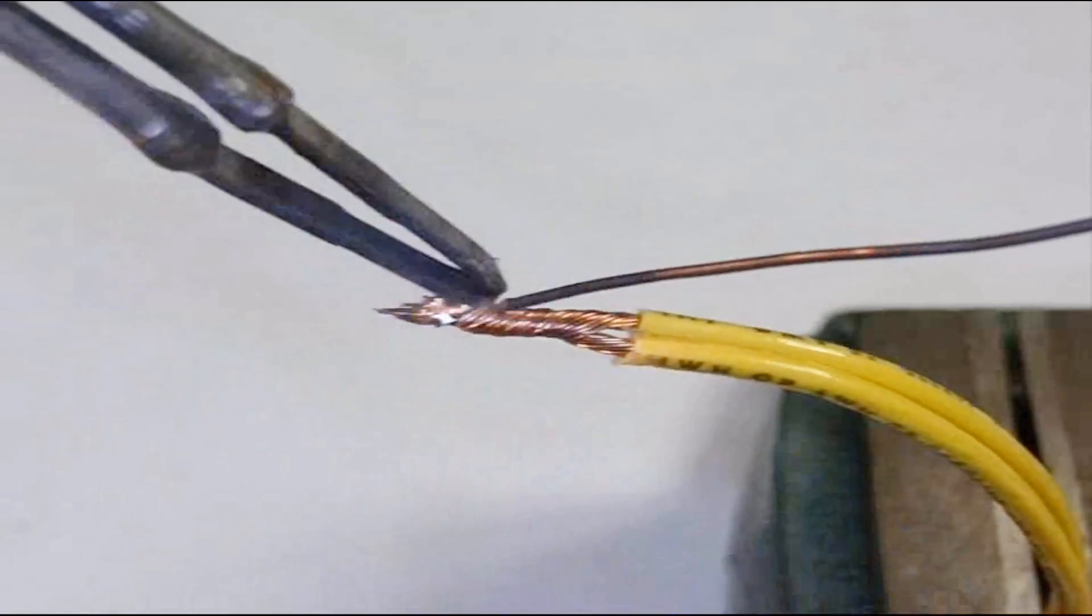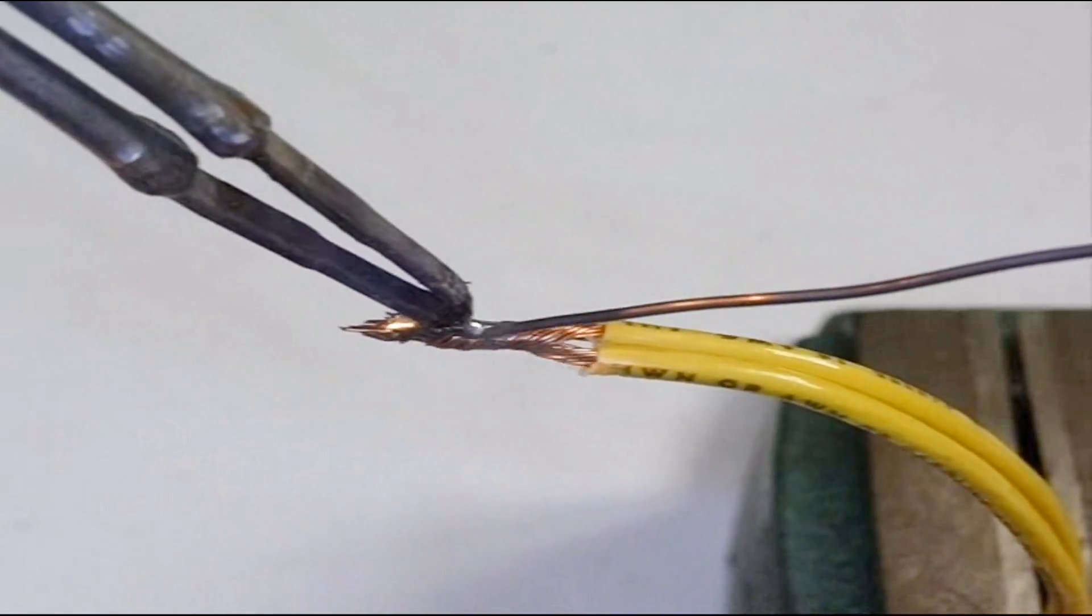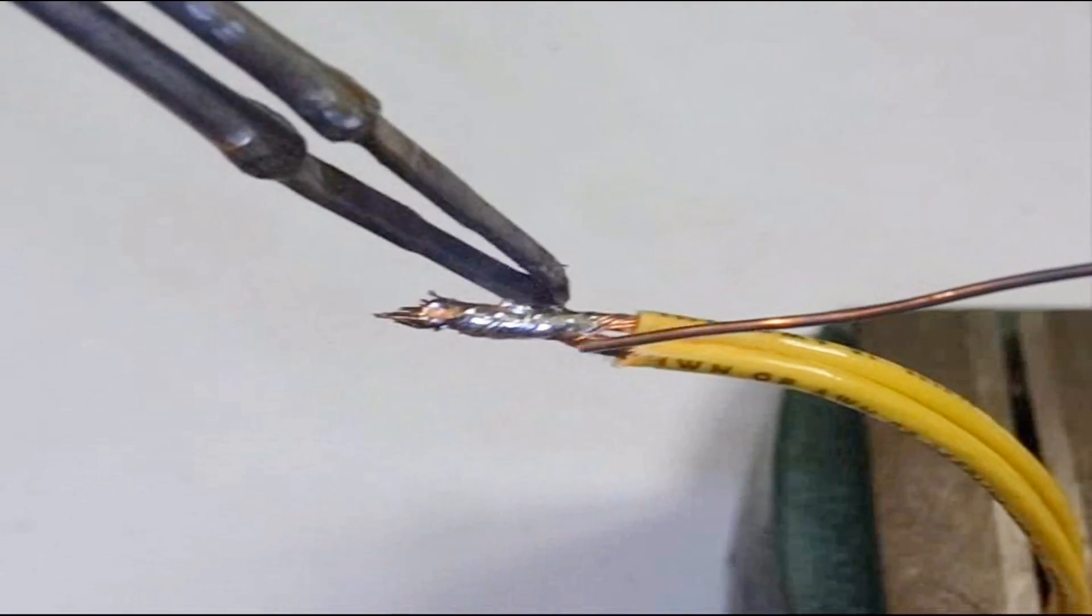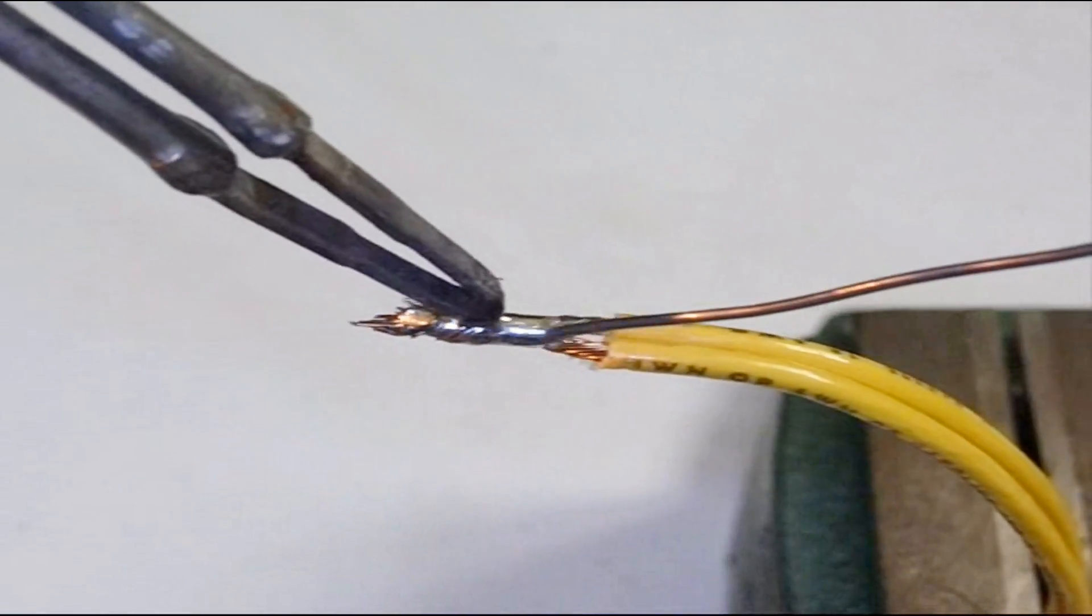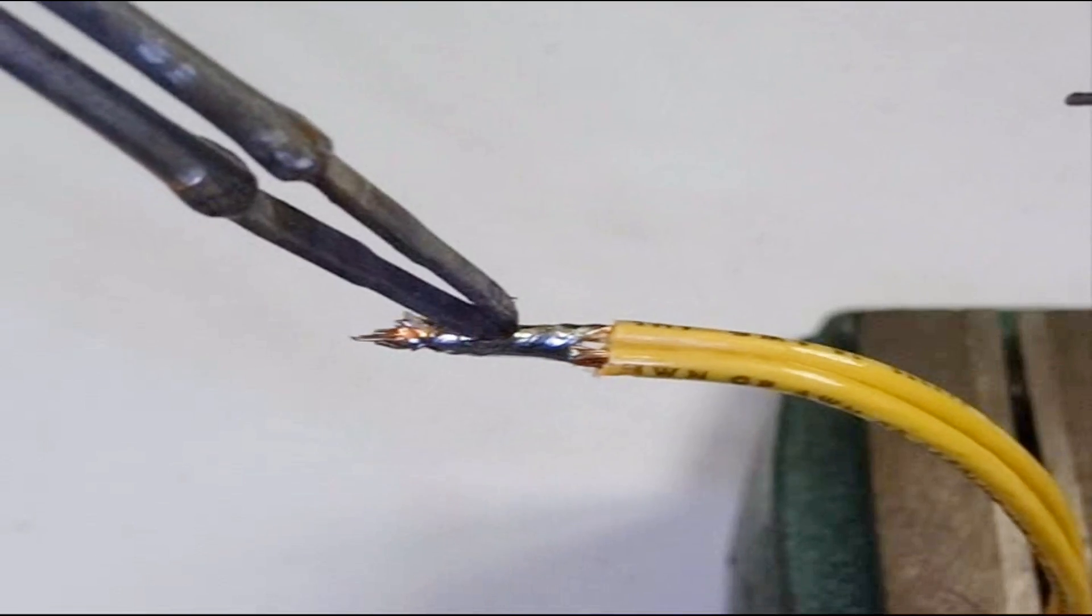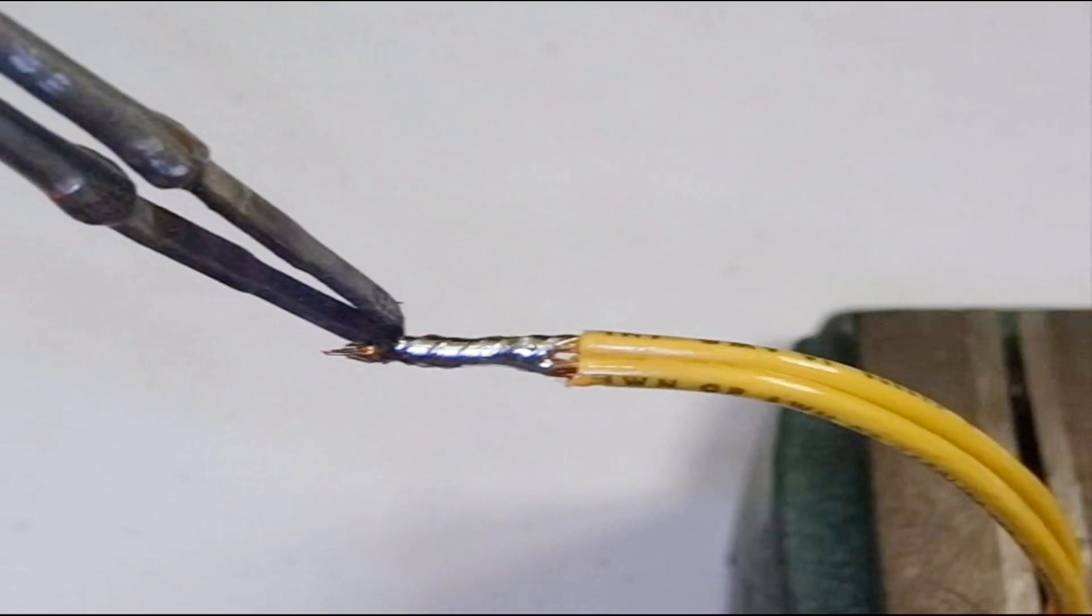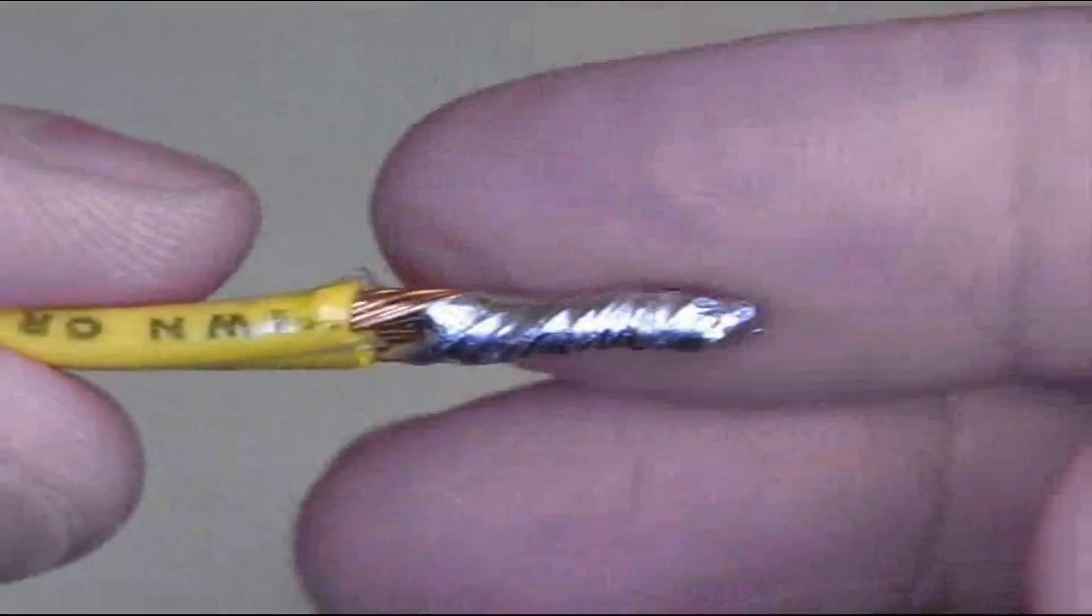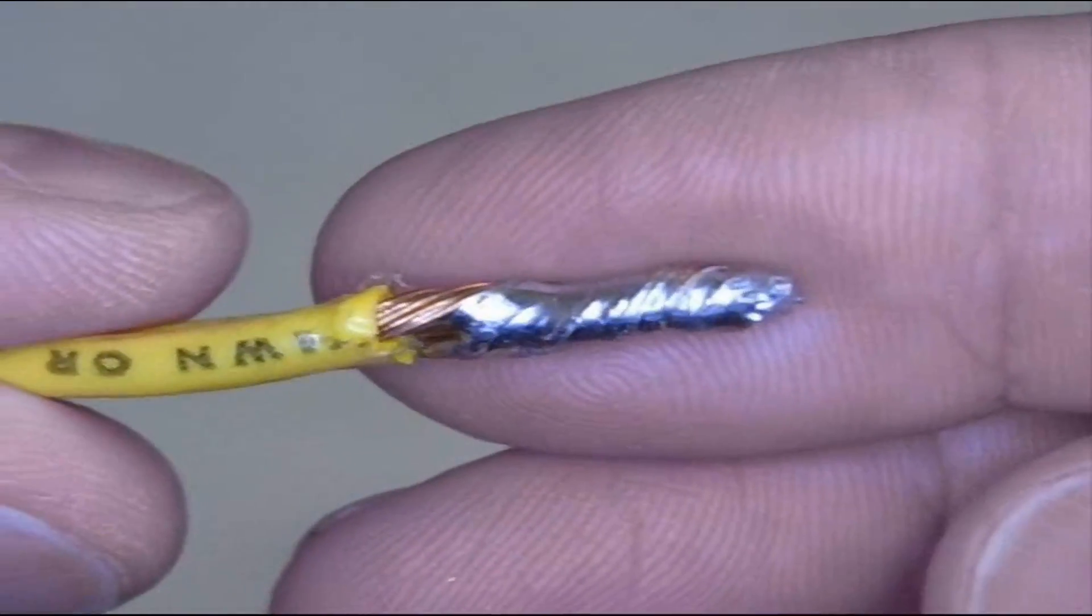That gives the insulation, it doesn't heat it up as fast and it will cause less melting of the insulation. Now I'm going to leave it for a second and let it cool a little bit. There's our pigtail joint. You have to get it soldered and you're ready to finish it out.